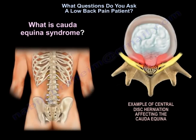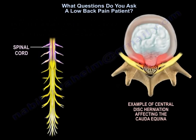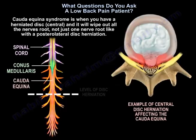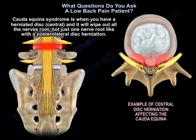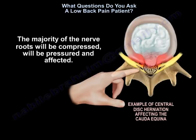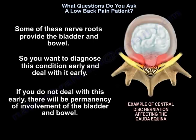What is cauda equina syndrome? Cauda equina syndrome occurs when a herniated disc is central and wipes out all the nerve roots — not just one as in a typical disc herniation. The majority of the nerve roots will be compressed and affected, and some of these nerve roots provide the bladder and bowel. You want to diagnose this condition early and deal with it early, because if you don't, there will be permanent involvement of the bladder and bowel.